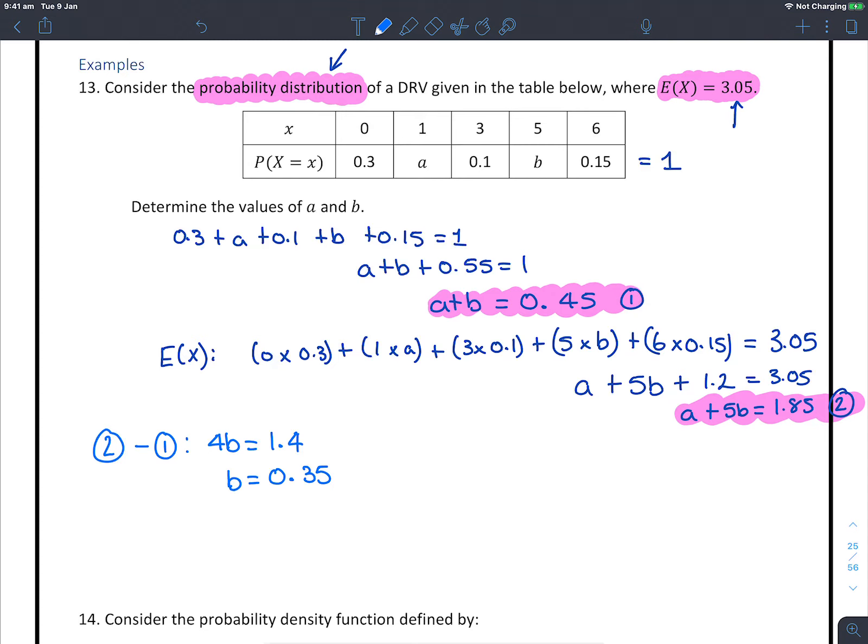So now I've found my value for b. Now I have b, I need to put it back into one of the equations. I'm going to pick equation 1 because it's just got b by itself. So sub into 1, equation 1 becomes a plus 0.35 equals 0.45. Take away 0.35 from both sides, a equals 0.1. So therefore a equals 0.1, b equals 0.35, and there we have it.